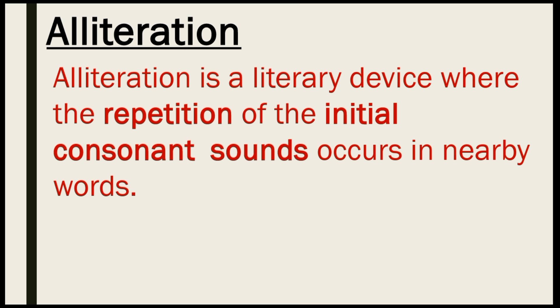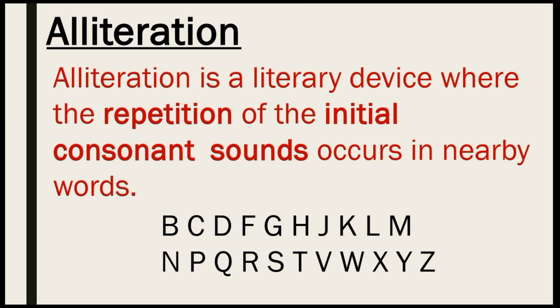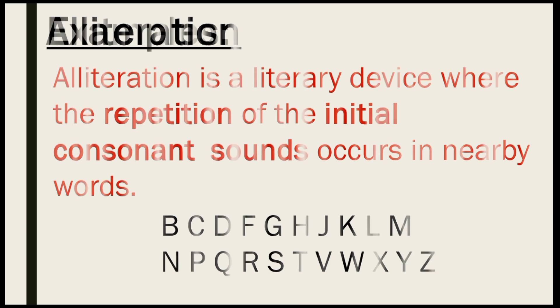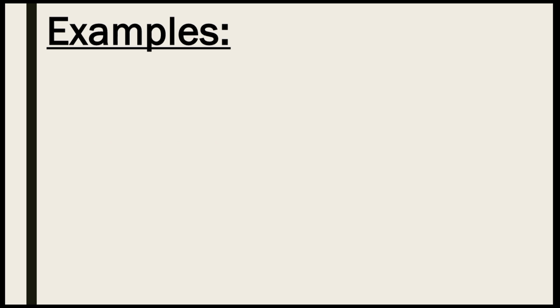In English, we have a total of 21 consonant letters and 24 consonant sounds. In alliteration, we talk about sounds rather than letters. In this way, we talk about the initial consonant sounds, not the letter.